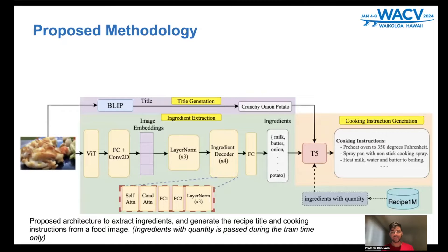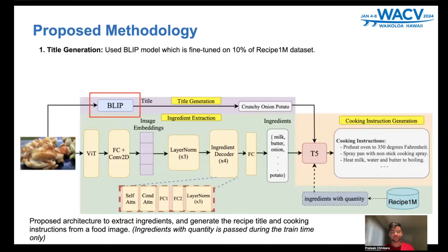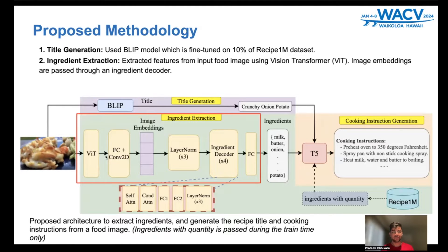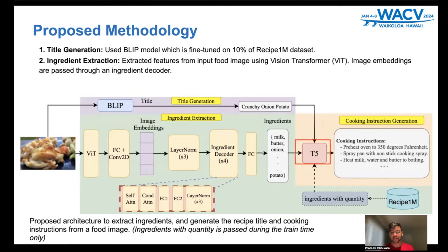This is the entire pipeline of our proposed approach. First, we have an input image, and then we pass it to a fine-tuned BLIP model, which is fine-tuned on 10% of the Recipe1M dataset to extract the title. Further, we use ViT to extract the image features, and then pass it to an attention-based decoder to obtain the final ingredients. Once we have the title and ingredients, we use T5 to get the cooking instructions.